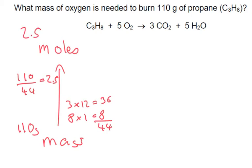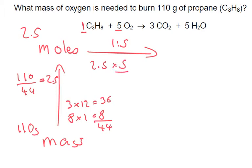Let's look at our ratio — it's a 1 to 5 ratio. So the 2.5 moles needs to be multiplied by 5 and divided by 1: times by 5, we get an answer of 12.5 moles.